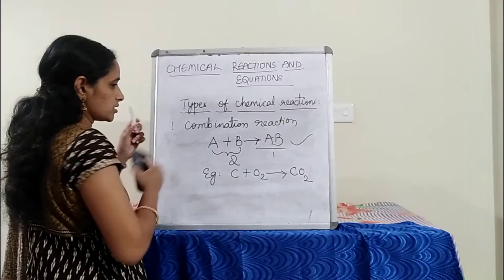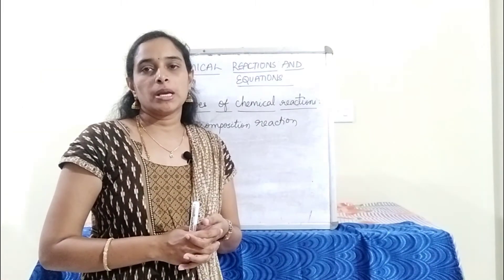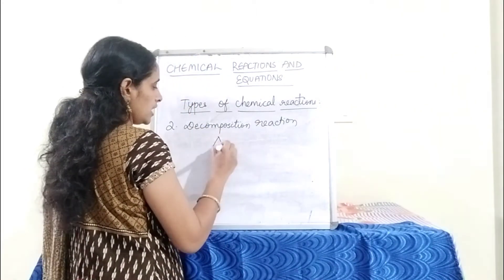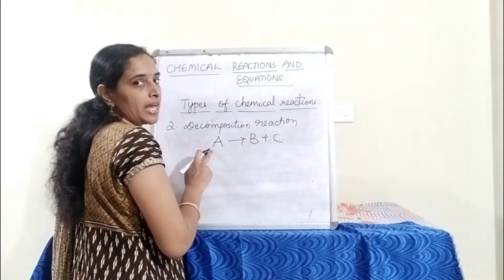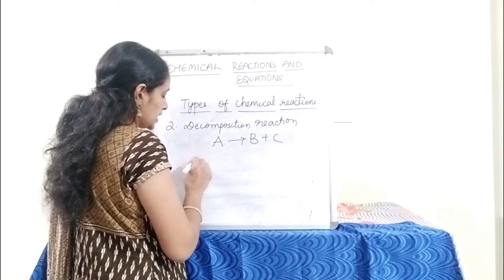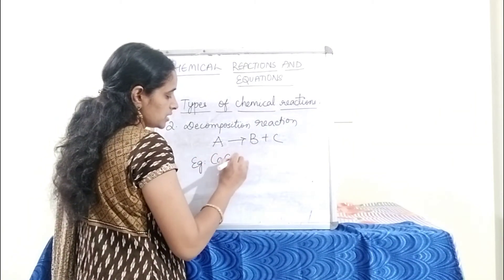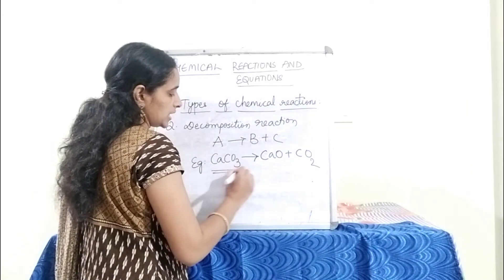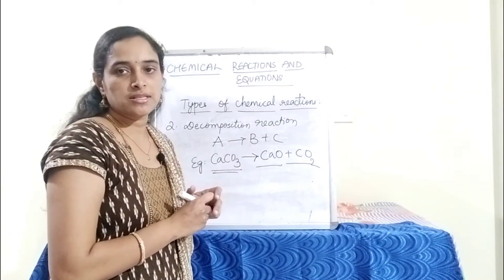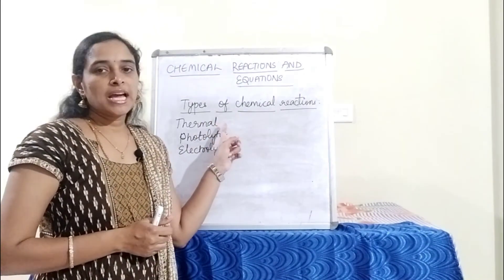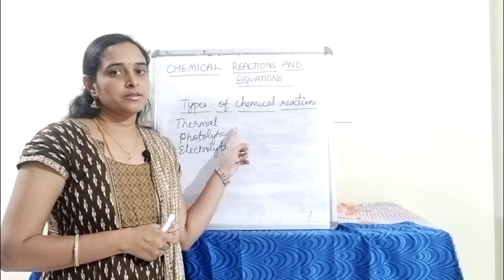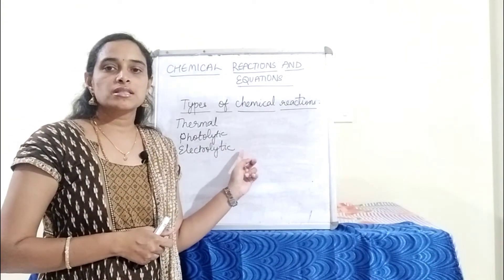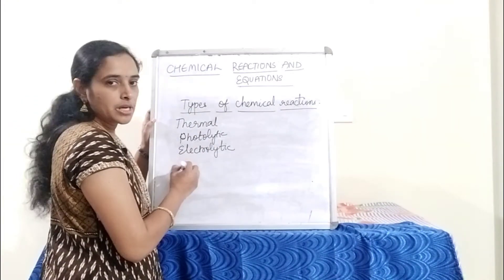Next is decomposition reaction. It is a reaction in which a compound splits into two or more products, represented as A → B + C. One example is CaCO3 → CaO + CO2 — a single reactant splits into two different products. A decomposition reaction needs heat; for a photolytic reaction it needs sunlight, and for an electrolytic reaction it needs electricity.